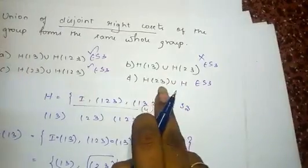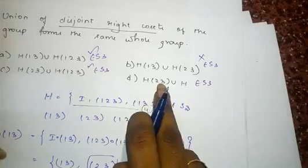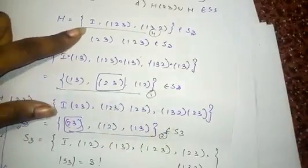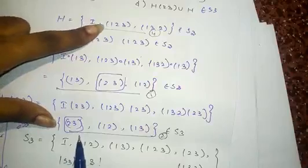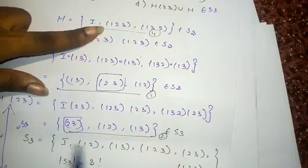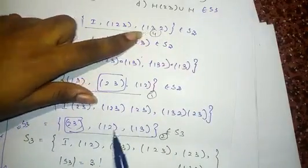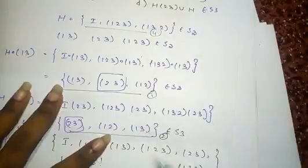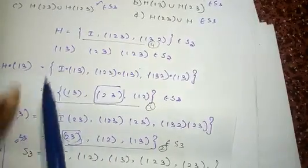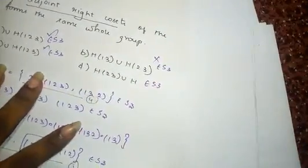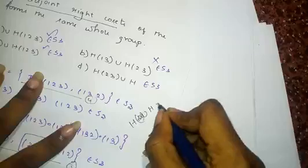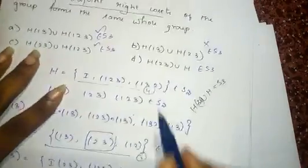For option D, we compare H(2 3) and H∘I. There is no I in H(2 3), no (1 2 3), no (1 3 2), no (2 3), no (1 2), and no (1 3) in common between them. So the union of H(2 3) ∪ H∘I gives S3. So this option is also correct.